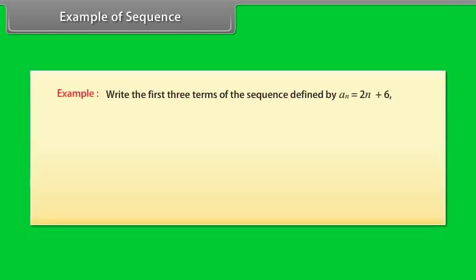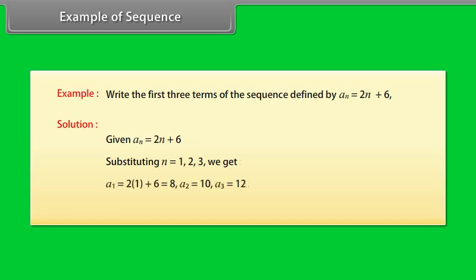Example: Write the first three terms of the sequence defined by a(n) = 2n + 6. Solution: Given a(n) = 2n + 6. Substituting n = 1, 2, 3 we get: a(1) = 2×1 + 6 = 8; a(2) = 10; a(3) = 12. Therefore, the required terms are 8, 10, and 12.